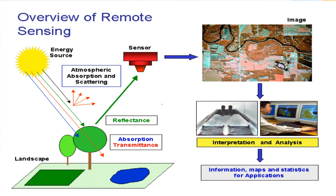We can get data of any part of the earth — ocean, mountains, any remote areas — where objects reflect or emit energy. This energy is detected and recorded by the sensors. They send electromagnetic radiation to record data of that particular environment. This data is then interpreted and analyzed, and then used for different purposes.